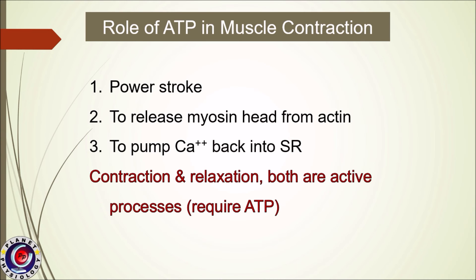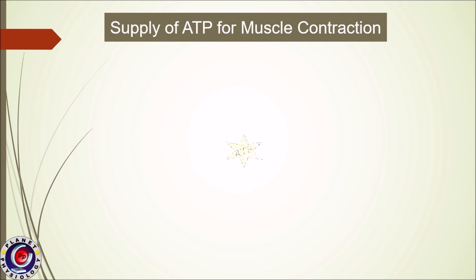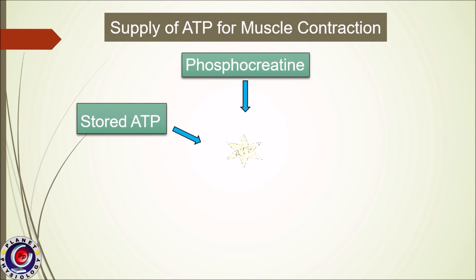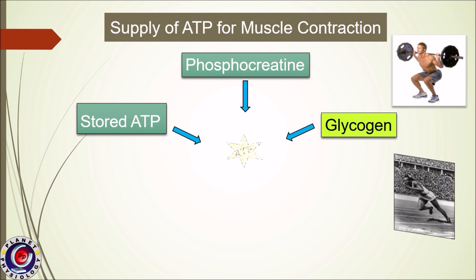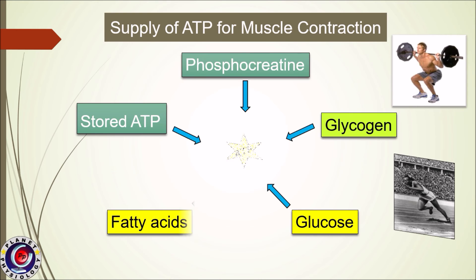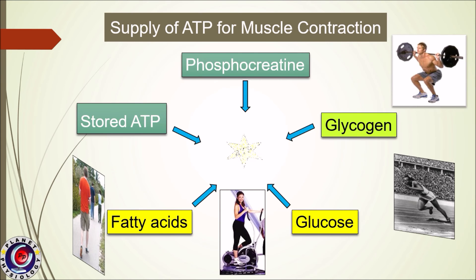As we have seen, ATP plays an important role during both muscle contraction and relaxation, so there must be a constant supply of ATP. The amount of stored ATP will not be sufficient to maintain muscle contraction for even a few seconds. Therefore, constant supply of ATP is provided to the muscle by either anaerobic glycolysis or by oxidative phosphorylation of glucose or fatty acids.